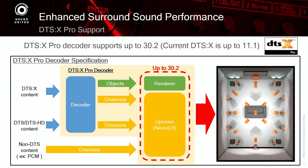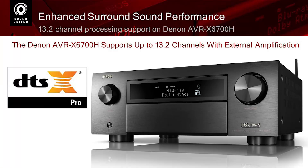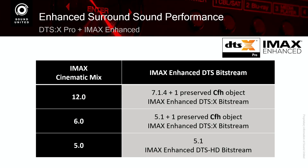No new content — just a new way to utilize the content you already have. You can even utilize the Neural:X upmixer to take non-DTS content and upmix that to up to 30.2 speakers. There are no 30.2 channel receivers yet, but Denon for 2020 is introducing the first AVRs that will support DTS:X Pro, which means you can get more than 11 channels of processing built into a Denon receiver, starting with the X6700. We will also do a firmware update on the X8500.